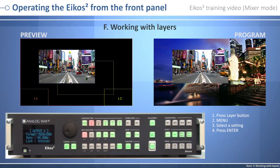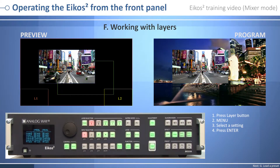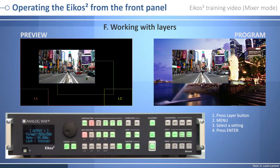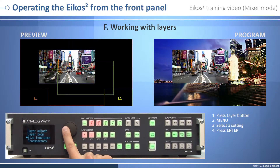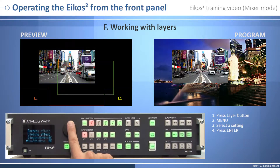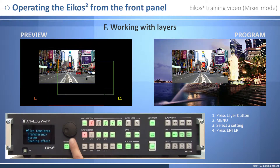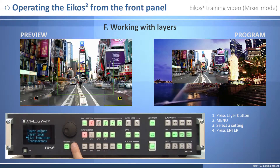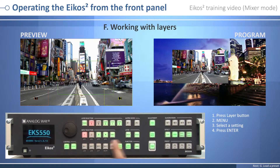Working with layers: once a source is assigned to a layer, you will have access to layer settings in the layer menu or directly by pressing the Layer button. The available settings depend on the layer selected: layer adjust, layer zoom, size, templates, transparency, border, opening and closing effect, smooth move, and status. All changes have to be validated by pressing the Enter button in order to be saved, then press Take to view the result on the program screen.